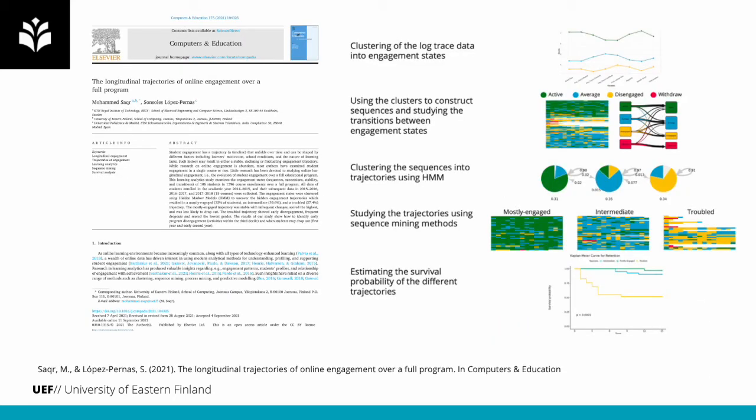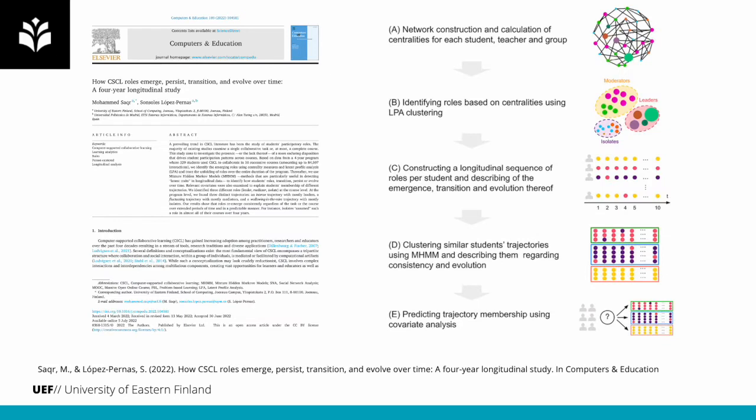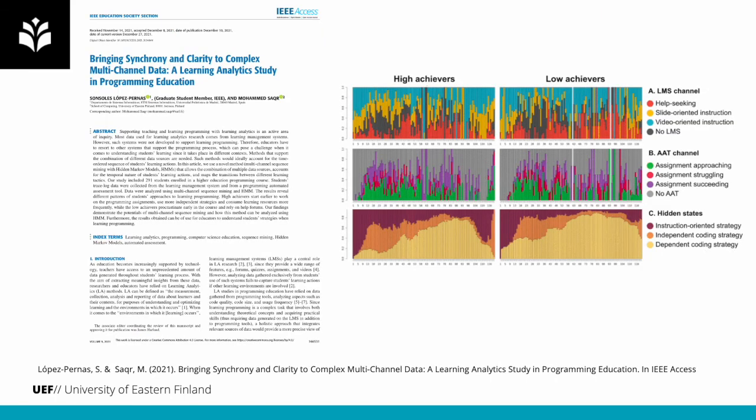We have used the VASTRA method in several articles before, with a similar aim to study engagement states throughout the whole program and how engagement trajectories can be used to predict dropout. We have also used VASTRA to study how collaboration roles evolve in computer-supported collaborative learning across a full study program, and to study how approaches to learning programming vary through a course between high and low achievers.